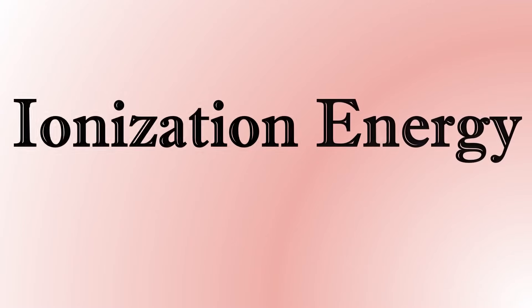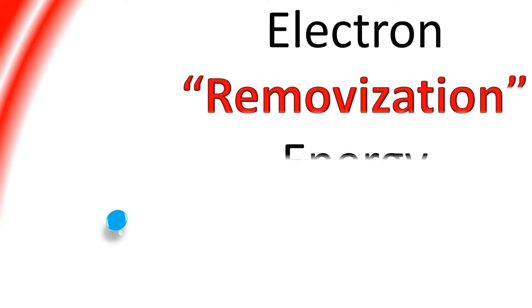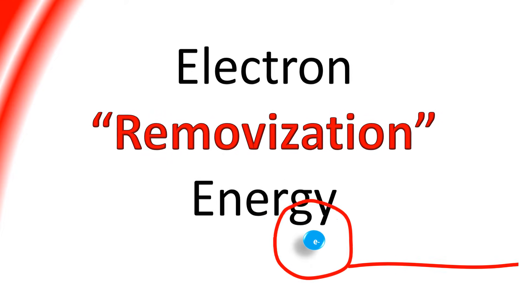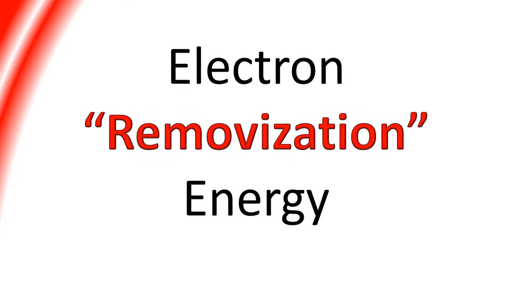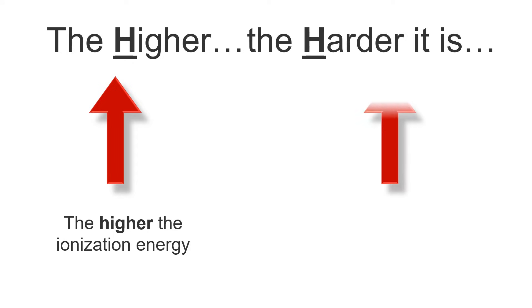The next periodic trend is ionization energy, or the energy needed for a neutral atom to remove an electron or become a positive ion. You can remember it by the phrase 'electron removization energy,' because you're literally removing an electron. The lower the ionization energy, the more likely it is for the element to turn into a cation or have a positive charge. The higher the ionization energy, the harder it is for the element to remove an electron.